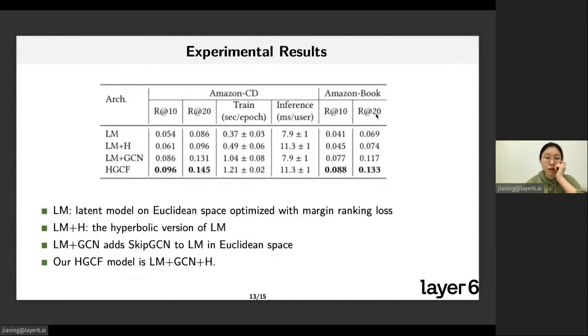We also run ablation experiments by adding each component of our model one by one to quantify how much it contributes to the performance. We start with a latent embedding model on Euclidean space optimized with margin ranking loss. Then the latent model plus hyperbolic for embedding learning on hyperbolic space. Then latent model plus GCN, like latent model on Euclidean space with GCN to aggregate the neighborhood information.